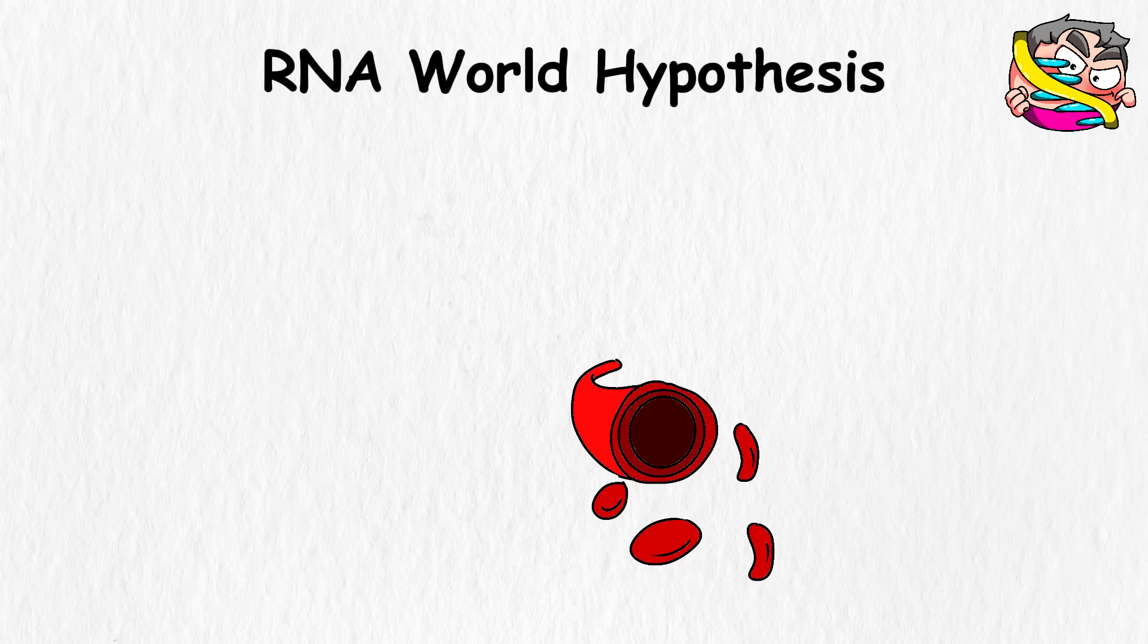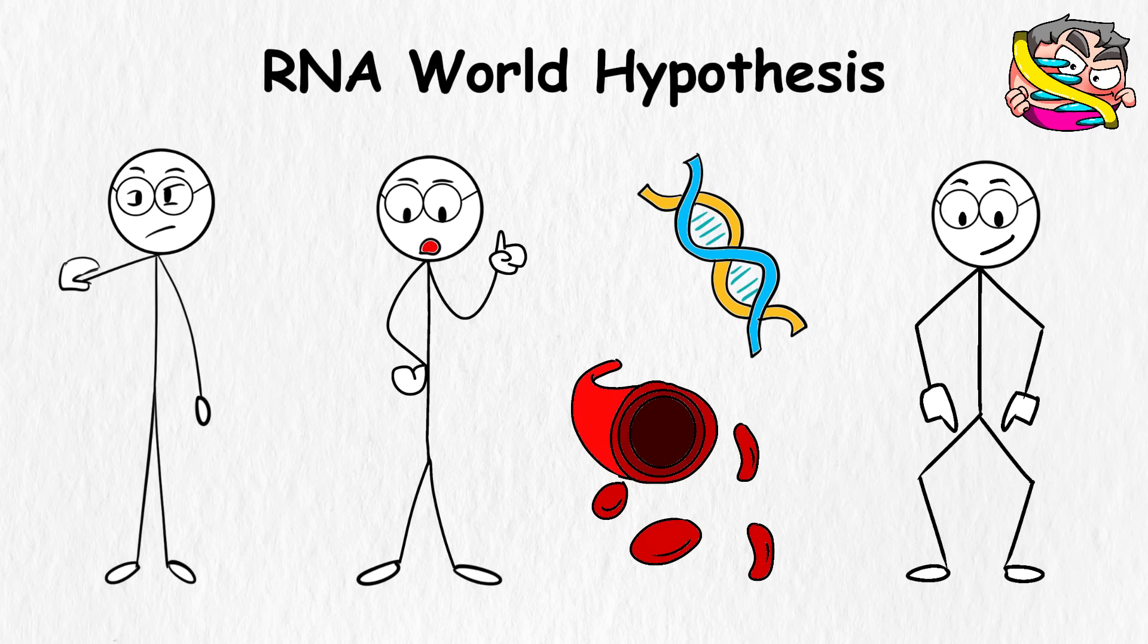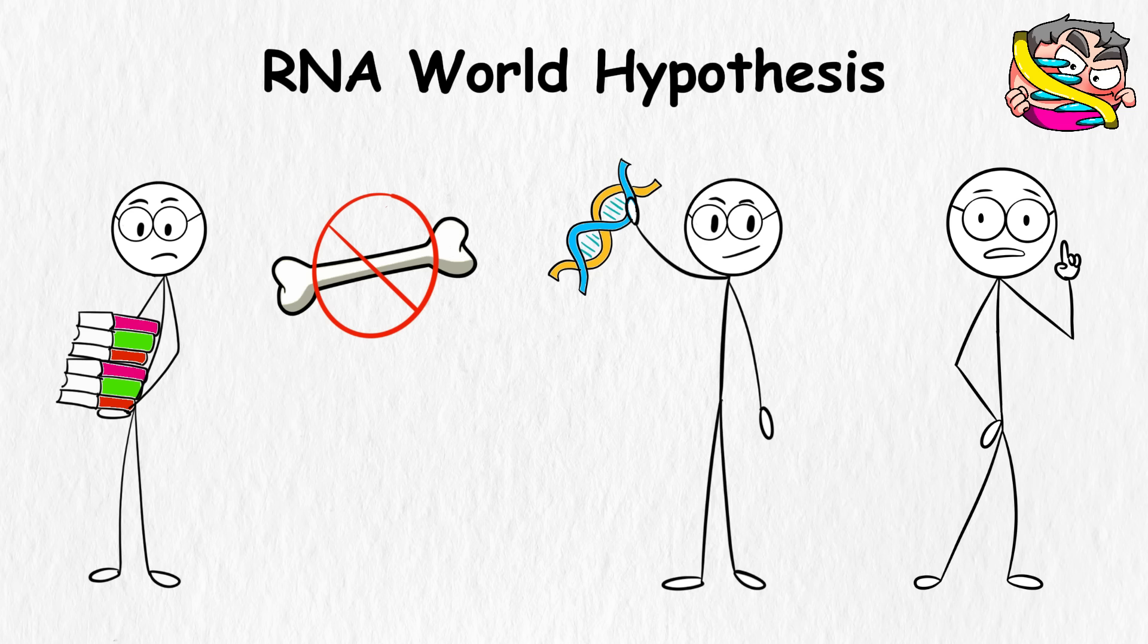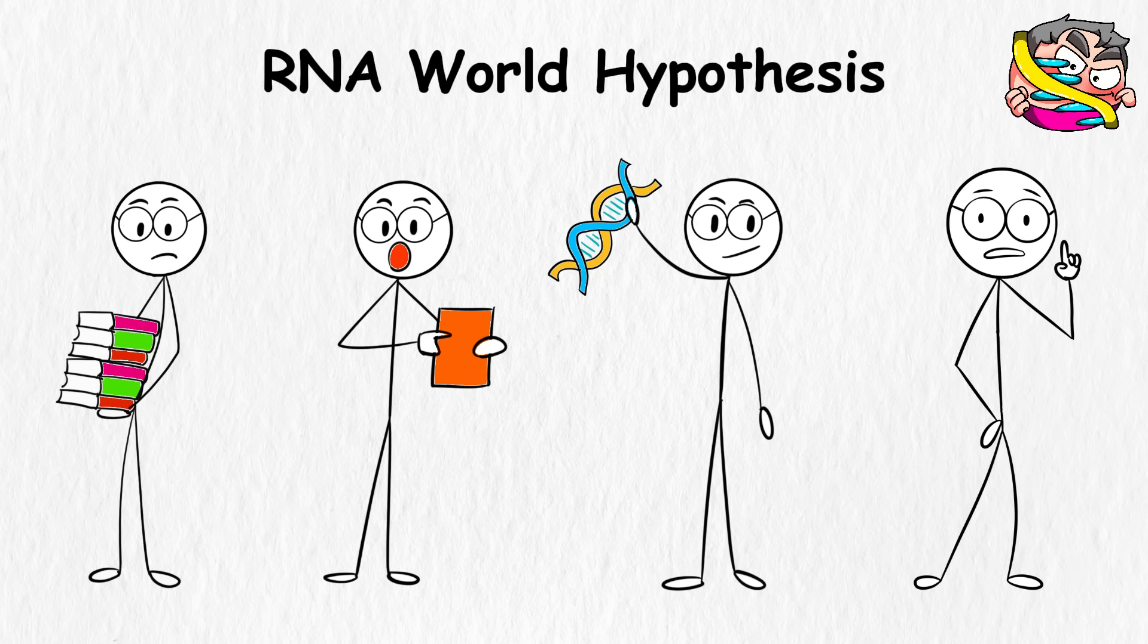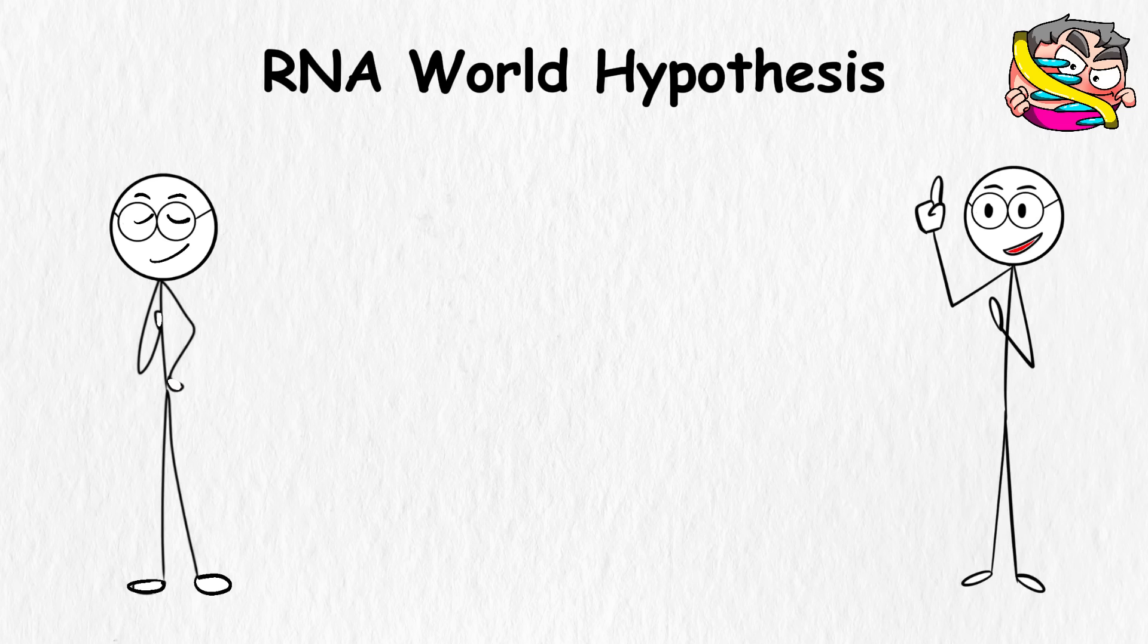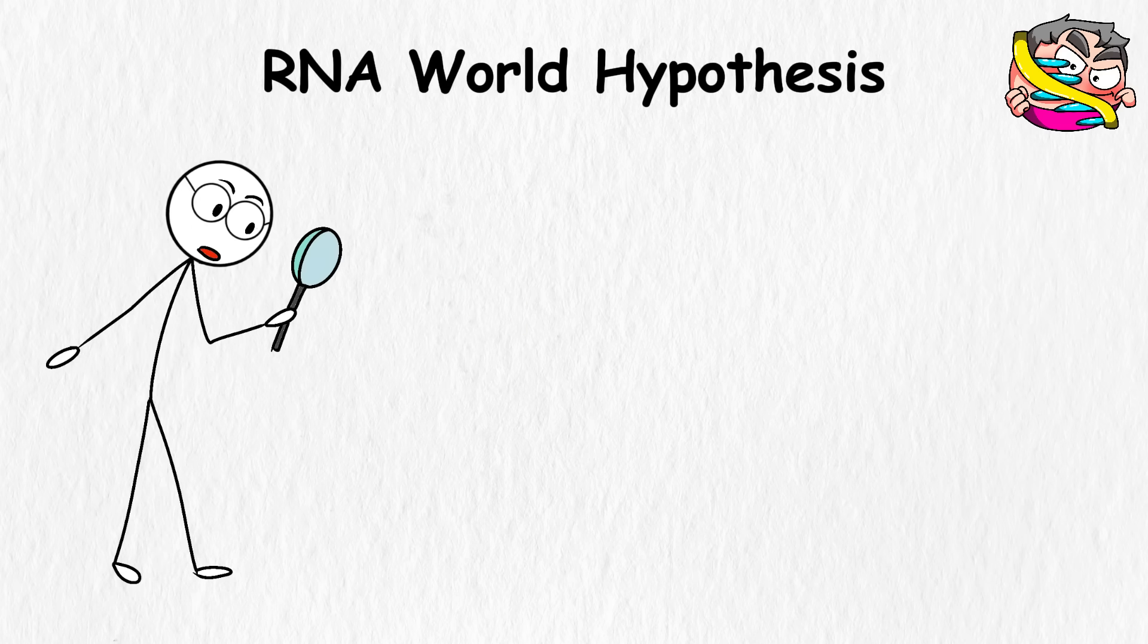RNA World Hypothesis. Before life had cells, or brains, or anything with legs, it may have started with something small. Really small. A strand of RNA. A molecule that can carry information and copy itself. No bones, no bodies, just tiny strands doing their thing in some puddle 4 billion years ago. According to this theory, RNA showed up first and started acting like a solo team. It didn't need a cell to start working, it just found a way to copy itself, using the stuff around it.